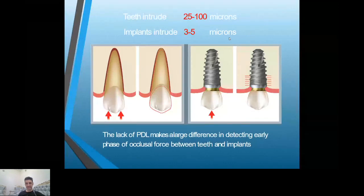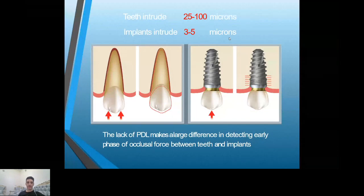This difference exists because the implant is functionally ankylosed in the bone, while the tooth is connected to the bone by the periodontal ligament.